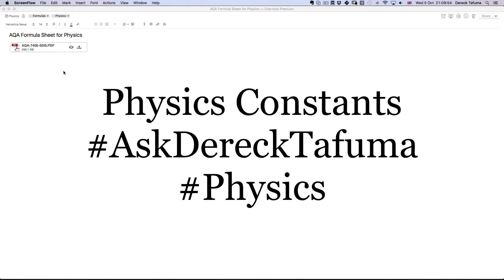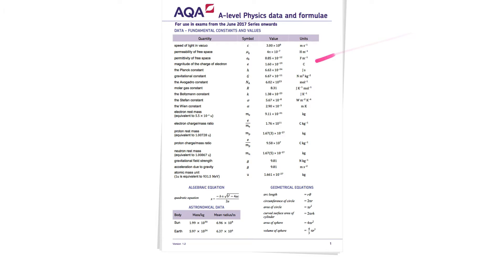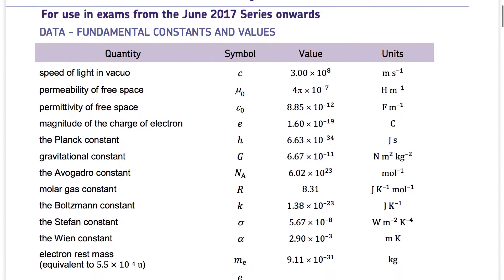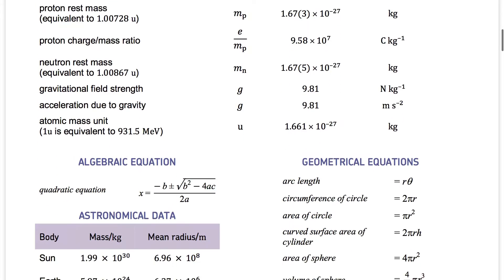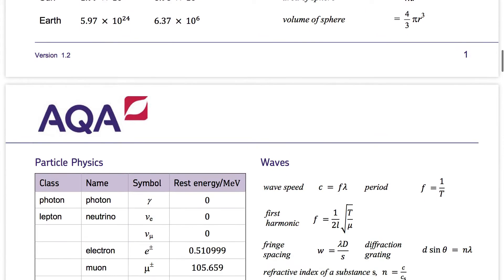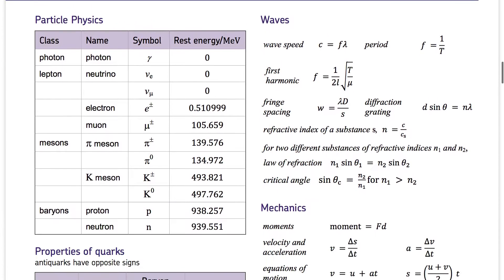So I've got my PDF file in Evernote which I'm going to present by clicking on this presentation tool. That's going to bring me up to the presentation mode and I can use a pointer as I do the presentation. What comes up is the presentation mode of the physics formulae, physics values, particle physics, waves.